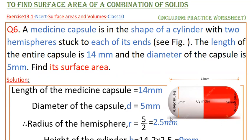So here this is the medicine capsule. The full length is 14 mm. This is a cylinder part and on either side are hemispheres. The diameter of the hemisphere is 5 mm.